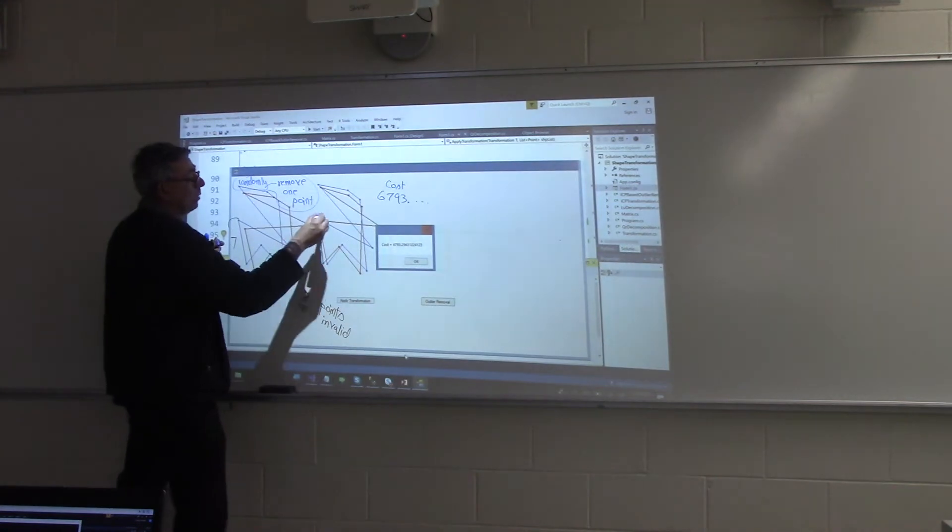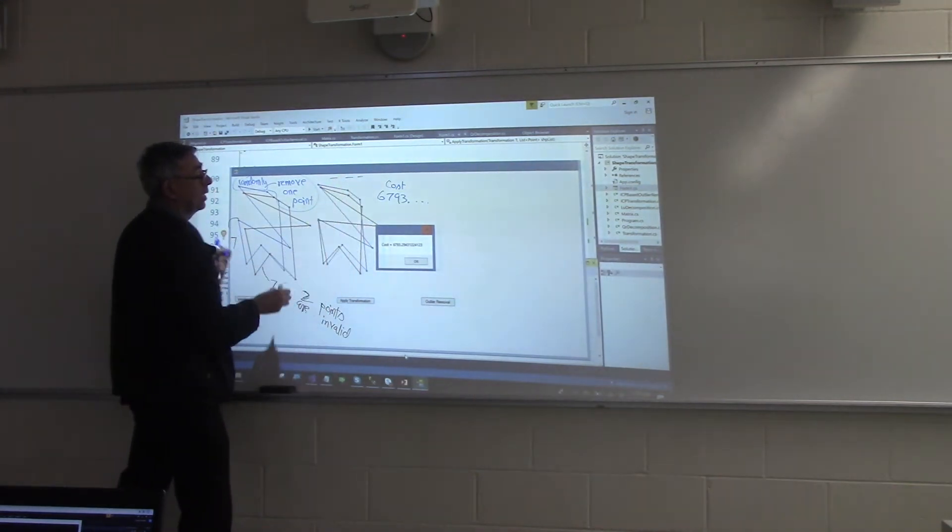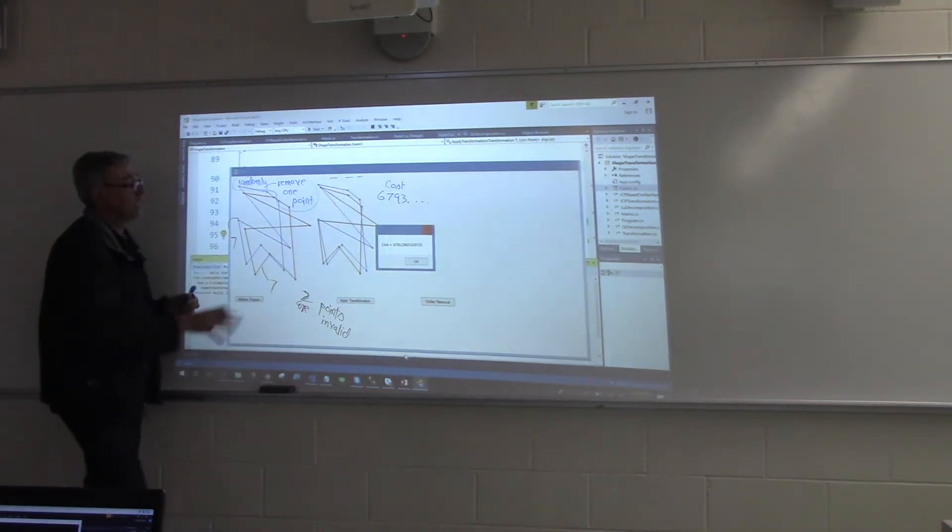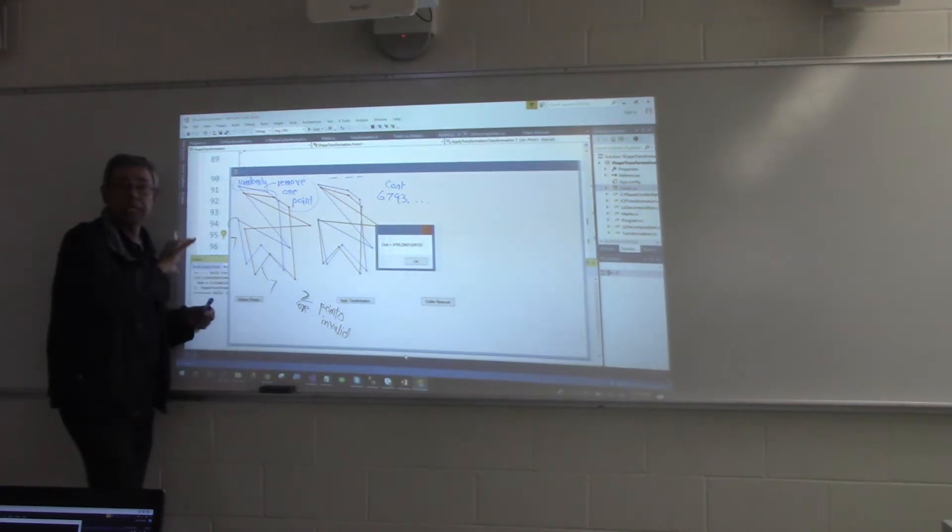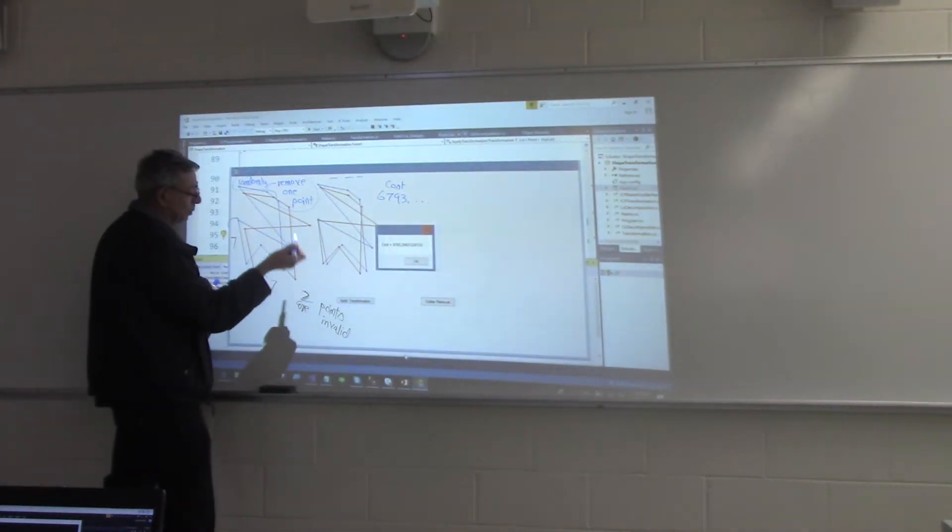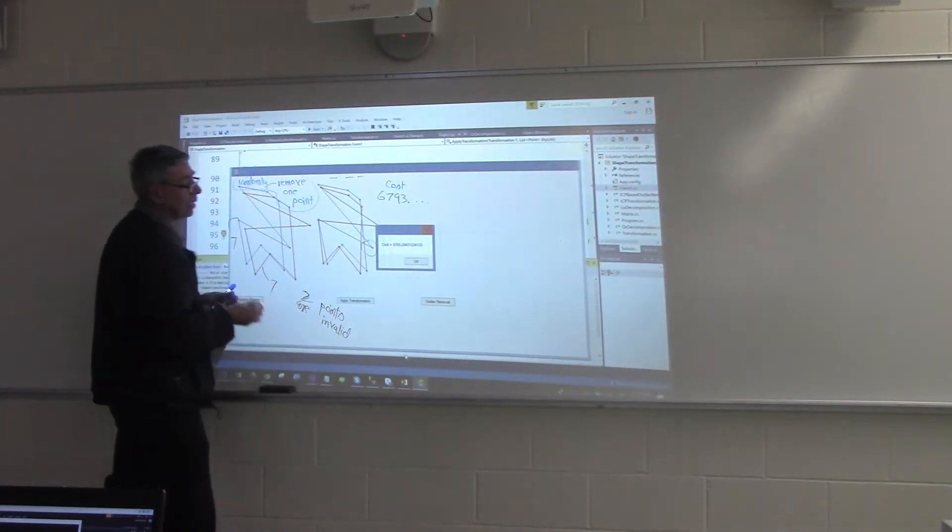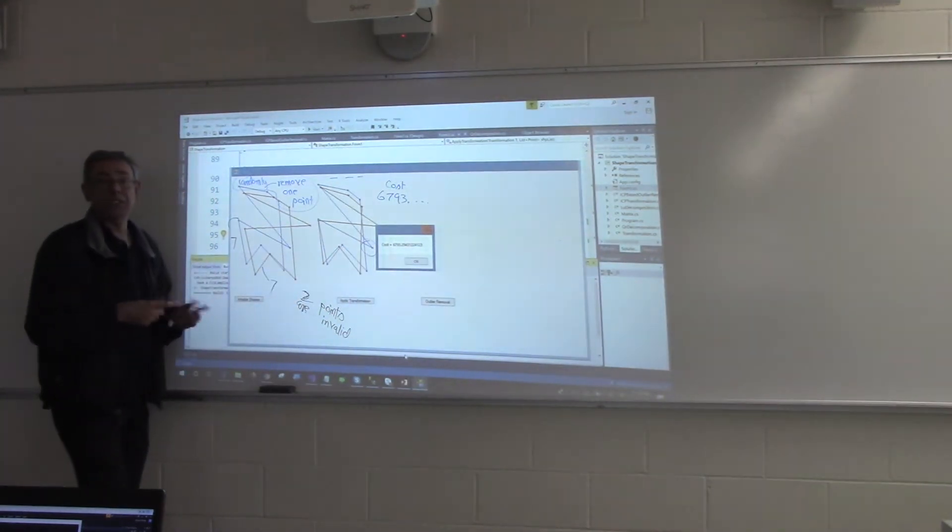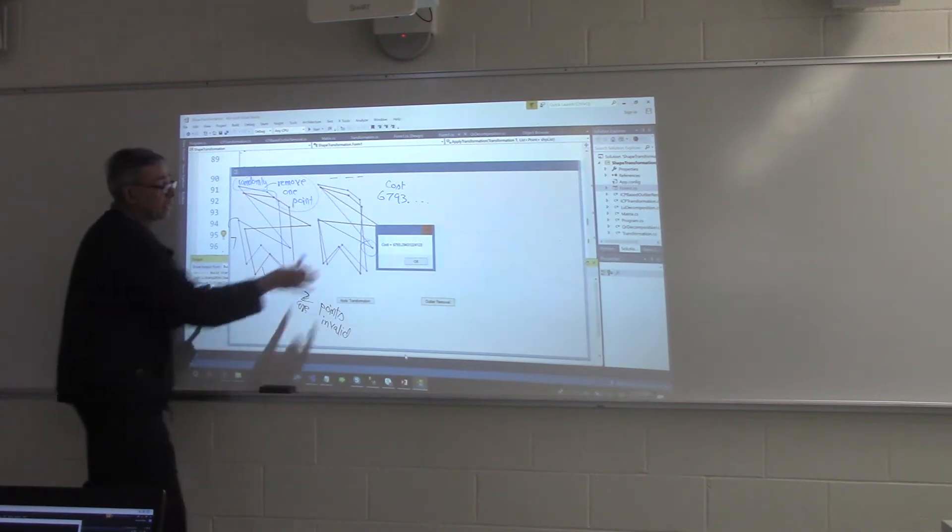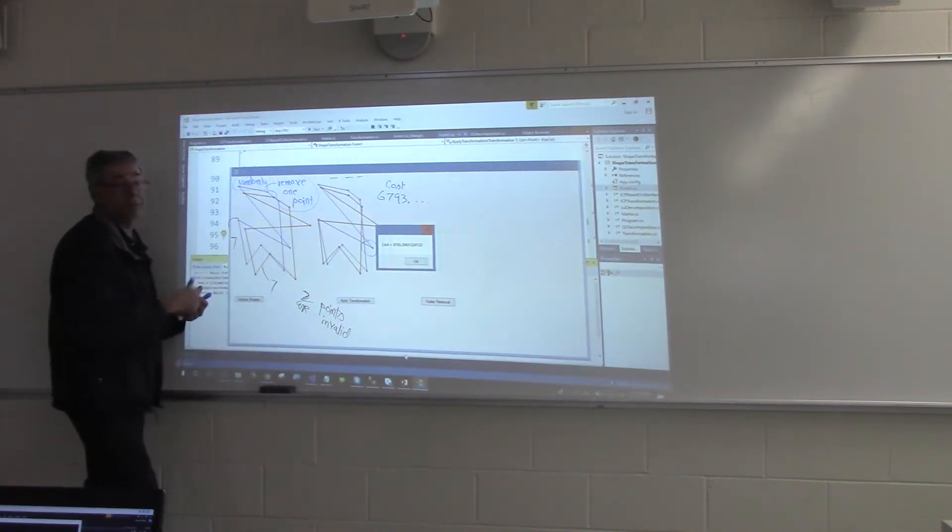Rather than randomly, I can go into a loop of seven, remove one. If the cost goes down, eliminate that point significantly. So maybe, let's pretend this is the outlier. We'll end up removing it because as soon as I remove it, the cost will significantly decrease.